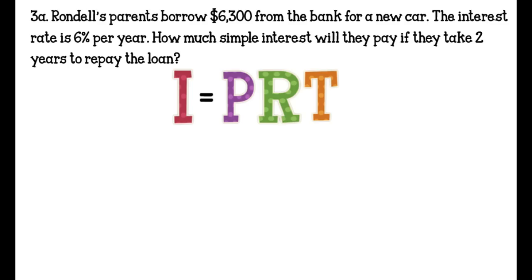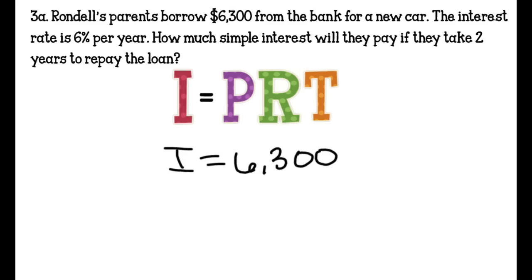Problem 3A: Rondell's parents borrow $6,300 from the bank for a new car. The interest rate is 6% per year. How much simple interest will they pay if they take two years to repay the loan? Loans work very similar to bank accounts — you do the same problem. We're finding interest, but this time they're going to be paying it. The principal is 6,300, the rate is 0.06, and we're talking about two years. We multiply all that together and get $756.